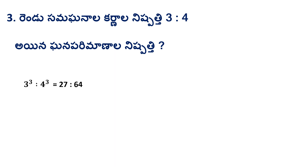Third question: the ratio of diagonals of two cubes is 3:4. We need to find the ratio of their volumes. The diagonal formula is D = A√3. So D1 = 3 and D2 = 4, giving us 3³ = 27 and 4³ = 64.